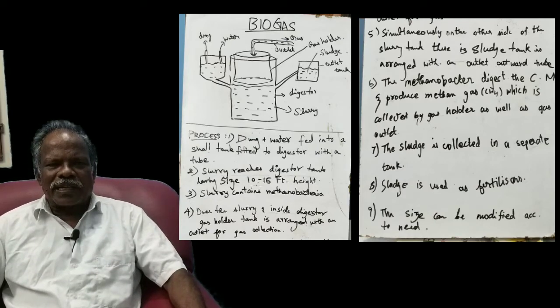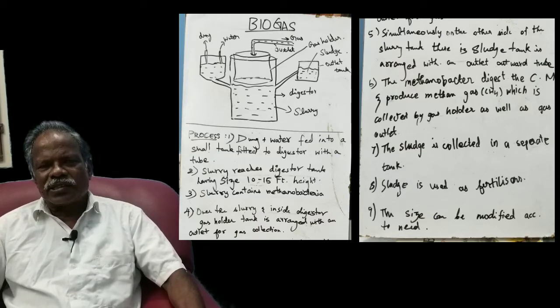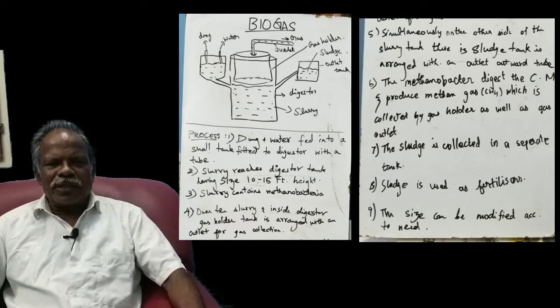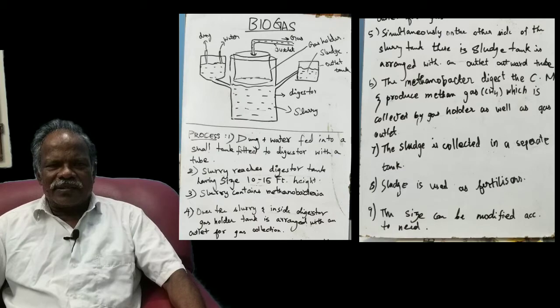The ruminants have methanogen bacteria. The methanogen bacteria digest the cellulose - that is the specialty of methanobacteria. It will produce methane from the cellulose. We are not having this type of digestive arrangement.